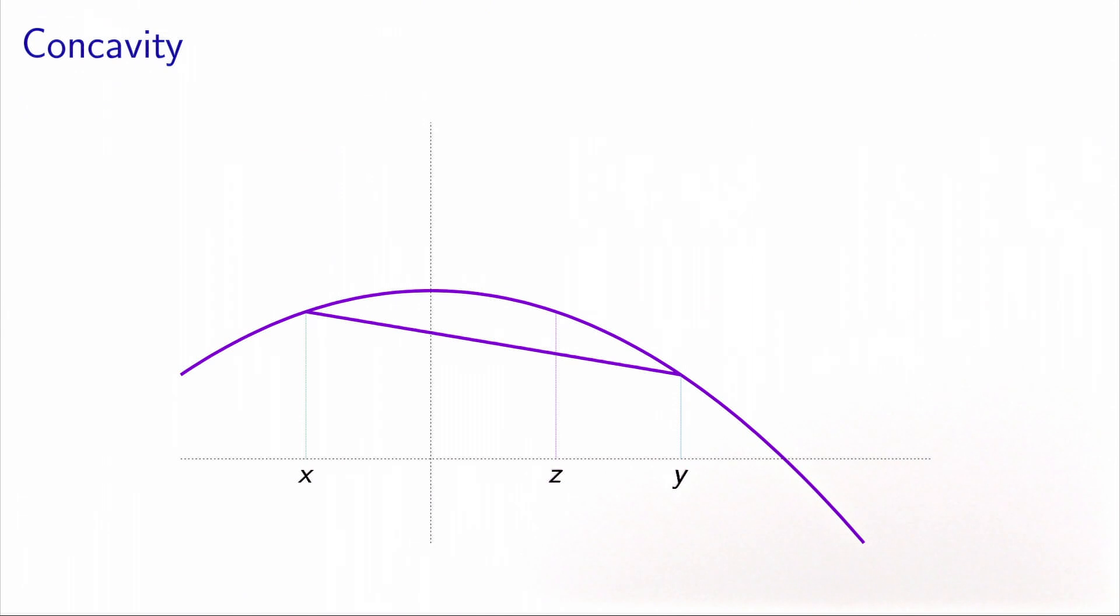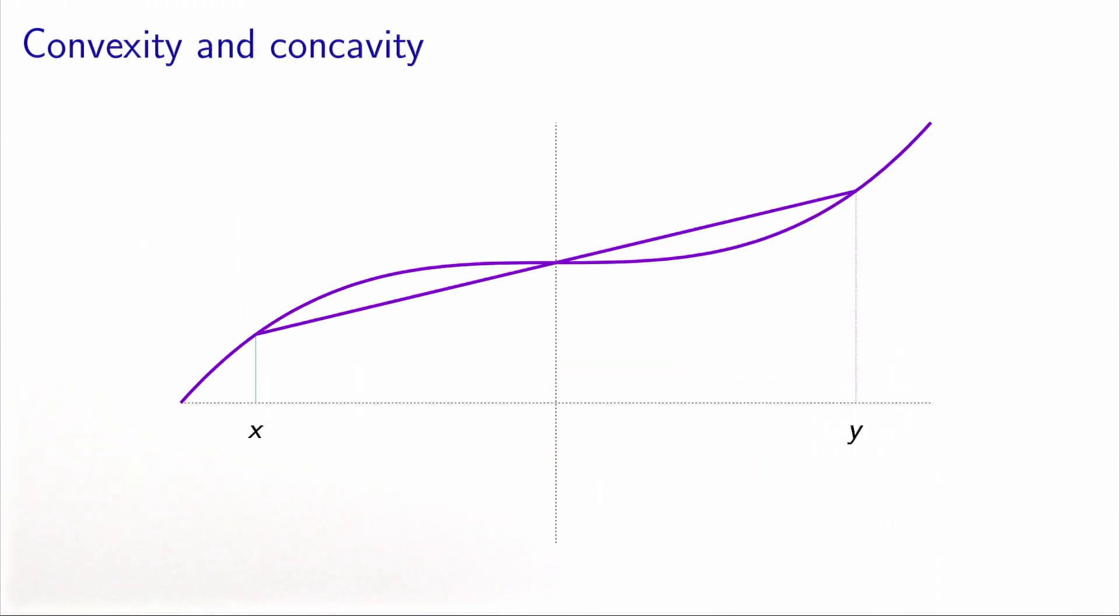And it's important to mention that concavity is not non-convexity. So a function can be non-convex but also non-concave. Let's see an example. This function here, which is represented here, is neither convex nor concave.